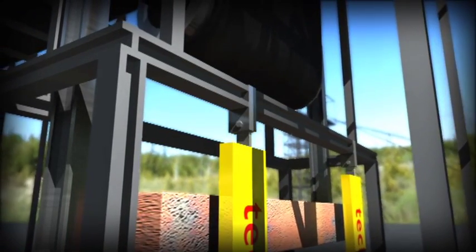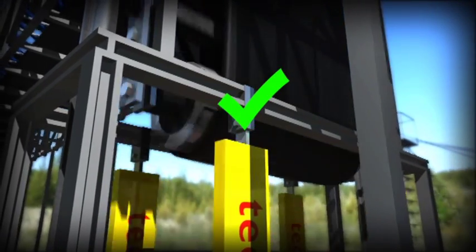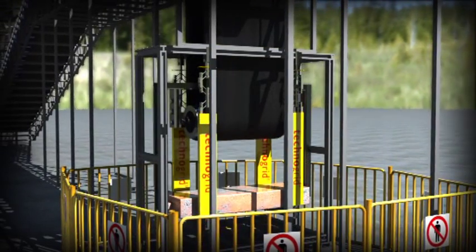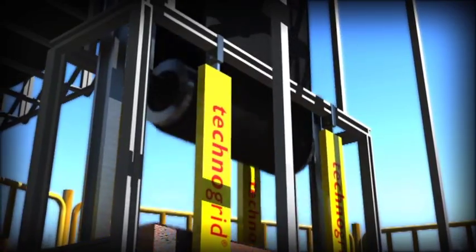The top of each grid is anchored to the structure, which must be verified to ensure that it can handle the reaction forces generated by the impact. Upon impact, the Technogrid system will stop the fall of the counterweight, absorbing all impact energy.